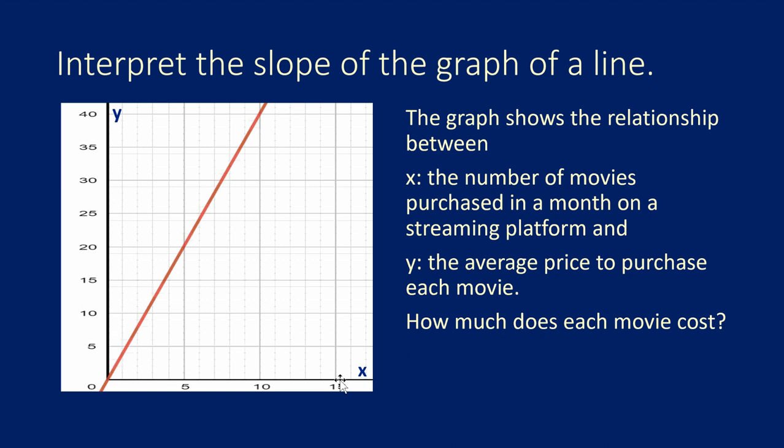So it's showing the relationship between X and Y. Y is the average purchase price for each movie on that streaming platform. So how much does each movie cost? Let's use the slope to answer that question. So how do we discover the slope from a given graph?